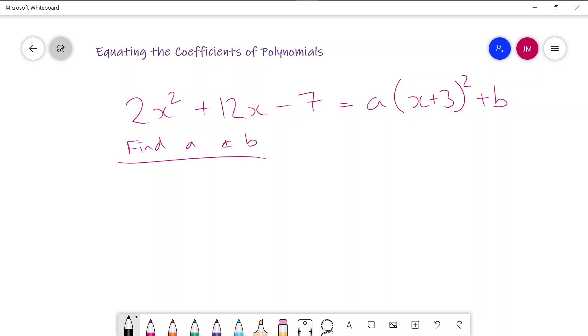First things first, we'll look at the right hand side of the equation. And we've got a x plus 3 squared plus b. And let's expand those brackets. So I'd get a times x squared plus 6x plus 9 plus b. So I get ax squared plus 6ax plus 9a plus b.